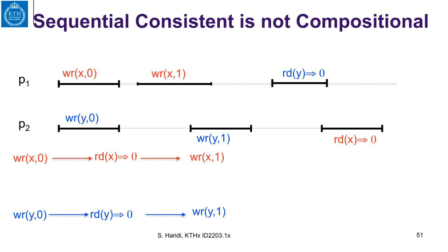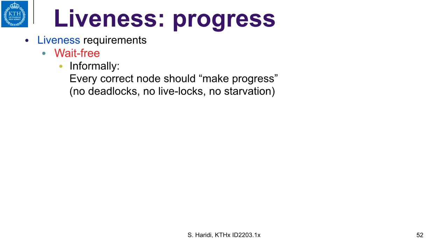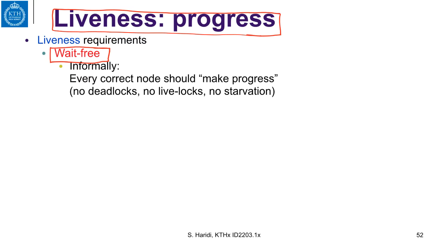We end this unit by talking about some definitions of liveness properties. We have been talking only about safety properties up to this point. Liveness has to do with progress. A liveness requirement that is wait-free says that every correct process should make progress. In a shared memory system with read-write registers, every correct process can make progress regardless of other processes that may fail — then we say the algorithm is wait-free.